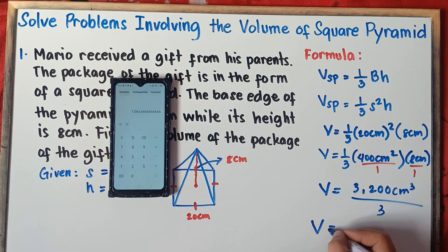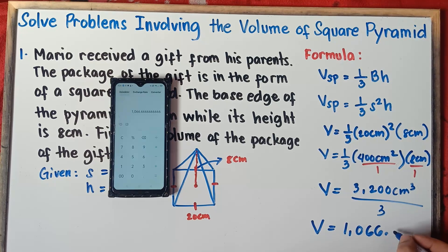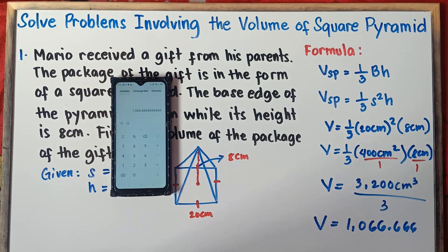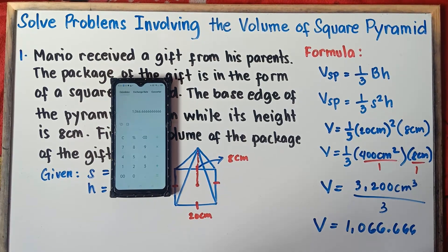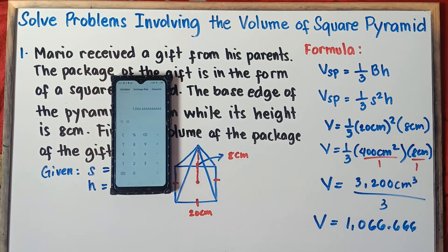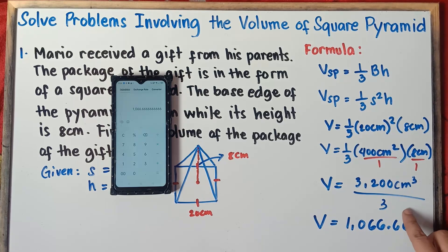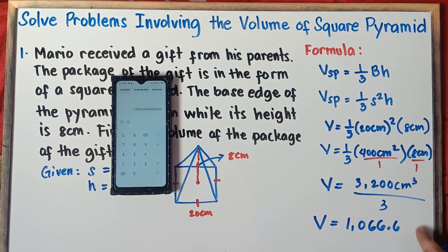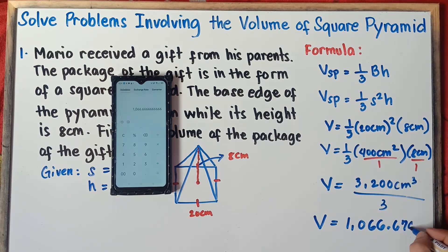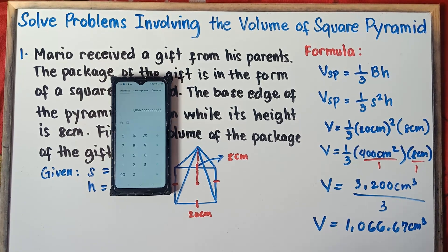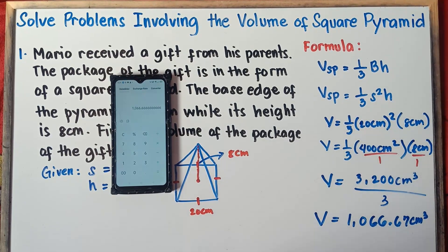The volume equals 1,066.666... We can round this up: after the 6, the next digit is 6, so we round up. This becomes 1,066.67. Do not forget the units — cubic centimeters. That's the answer for example number 1.